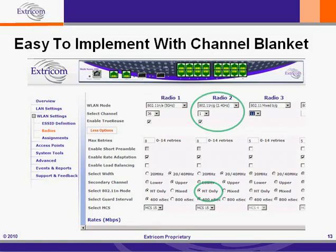Just to touch on the 5 GHz band for a few seconds: Radio 1 is running another blanket in 802.11n HT Mode. And Radio 4, partly shown at the right side of the screen, is running a blanket for legacy 802.11a clients. We'll talk more about 5 GHz operation later.